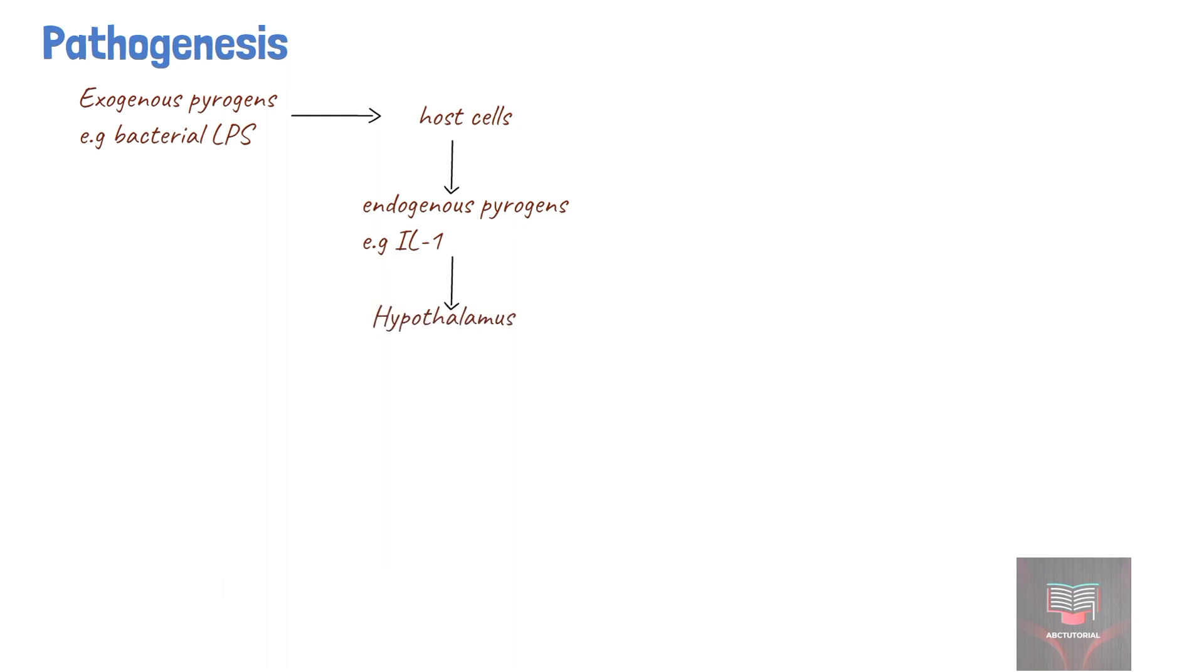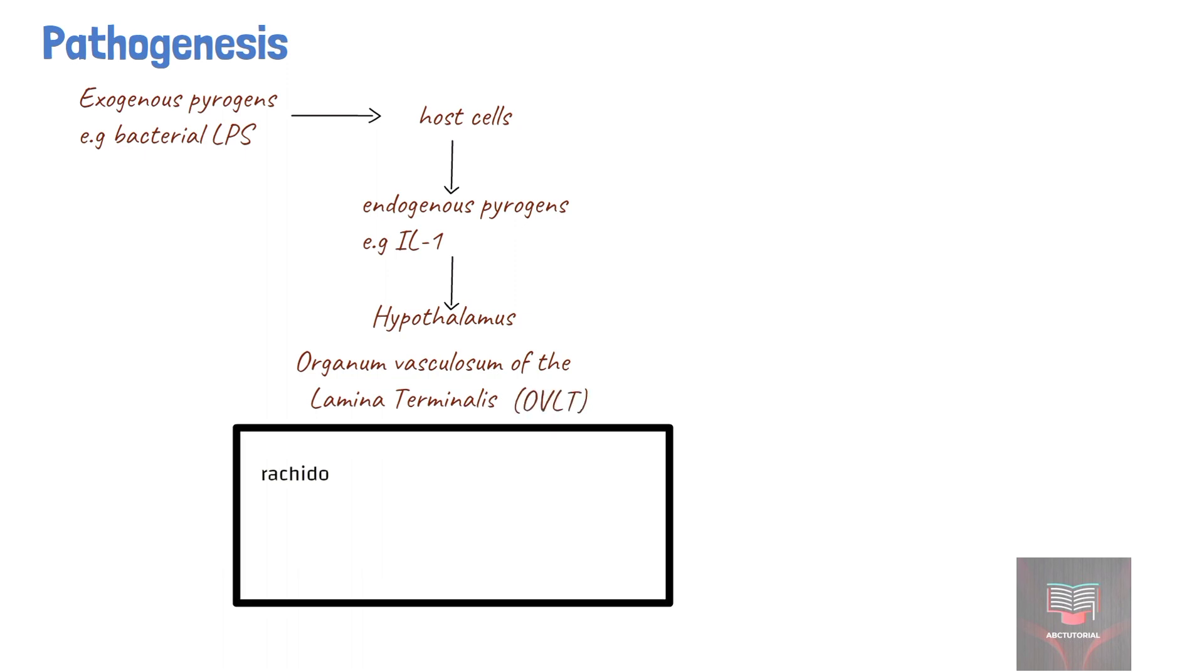At the OVLT, they induce synthesis of prostaglandins, of which prostaglandin E2 (PGE2) is the most important. These prostaglandins then raise the thermostatic set point to initiate the febrile response. The hypothalamic thermoregulatory center accomplishes heat production by inducing shivering to increase heat generated by the muscles, and heat conservation through vasoconstriction.